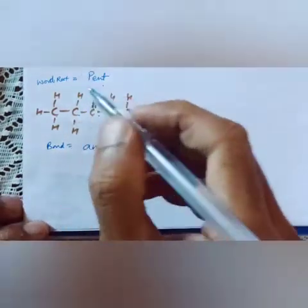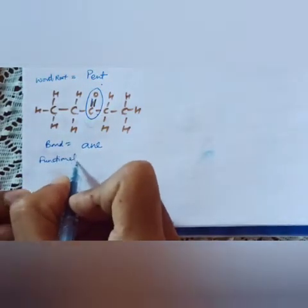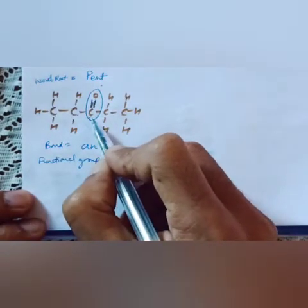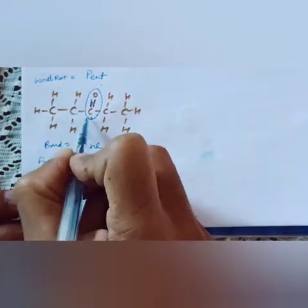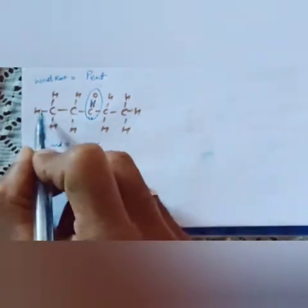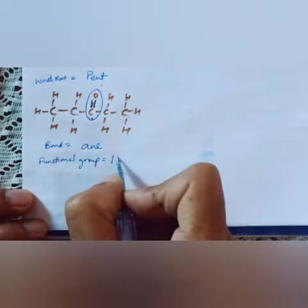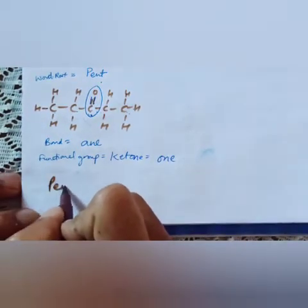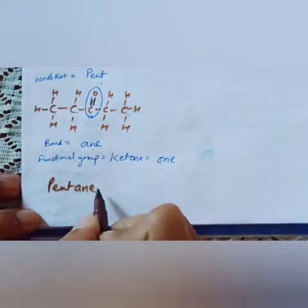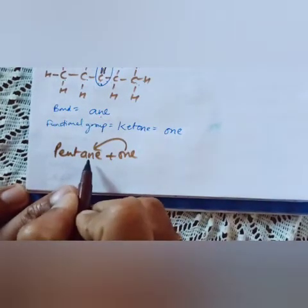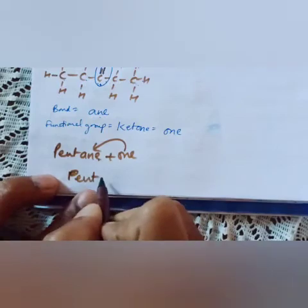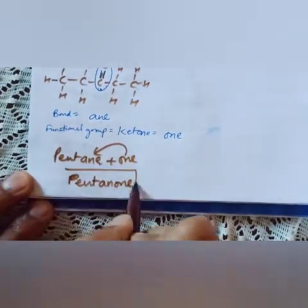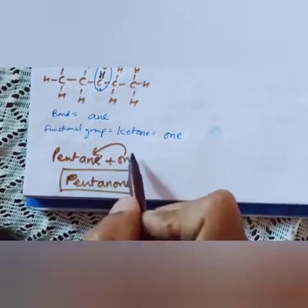The bond gives us 'an', so now third — the functional group. The C=O is in the middle (not at the corner), so this is a ketone, not an aldehyde. For ketone we write 'one'. So: pent + an + one = pentanone. But when the functional group suffix attaches, the 'e' from 'ane' is dropped, giving pentan-3-one. This is the compound name — pentan-3-one. This is how single straight chain nomenclature works, which you also studied in 10th class.